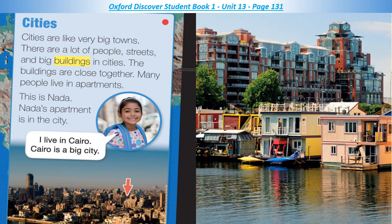Cities are like very big towns. There are a lot of people, streets, and big buildings in cities. The buildings are close together. Many people live in apartments. This is Nada. Nada's apartment is in the city. I live in Cairo. Cairo is a big city.